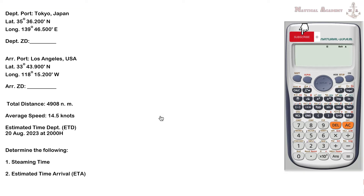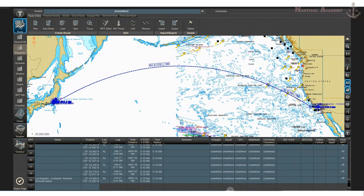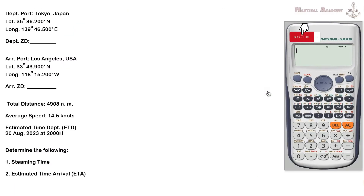In this video, I'm going to show you how to calculate or determine the estimated time of arrival. Our departure port is Tokyo, Japan and our arrival port is Los Angeles, USA. The total distance taken from the Navi Planner is 4,908 nautical miles. The given average speed is 14.5 knots, and the estimated time of departure is 2000 hours on August 20, 2023.